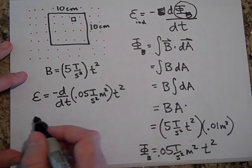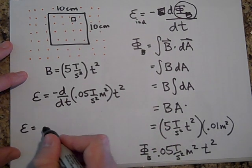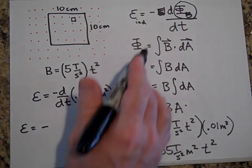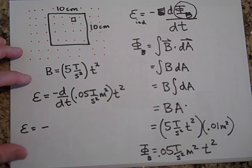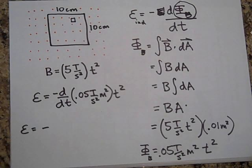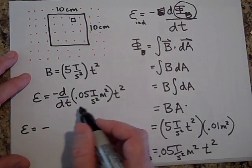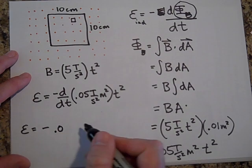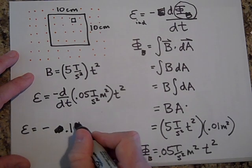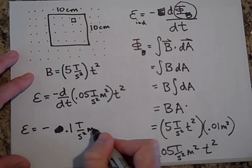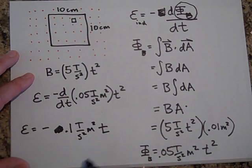When I do that, I get that it's equal to the negative. You know, this negative sign, we will take care of in another, actually the next video. We'll use something called Lentz's law to tell us the direction of the current. So I will rarely use that negative sign, but I'll always pull it along so that the math works out. So if I take this derivative then, I'm going to get 0.1 Teslas, second squared, meter squared, T to the first power.